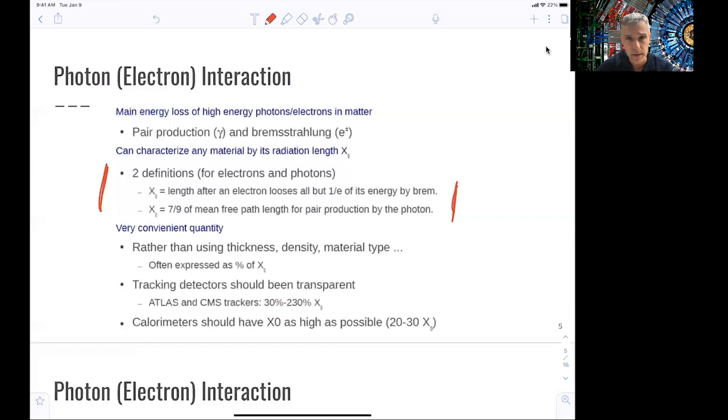Typically, when you build detector concepts, like a collider experiment like ATLAS or CMS, you want the tracking volume to be of low radiation length. For ATLAS and CMS, this depends on the rapidity or the forward direction, but it varies between 30% and 200% of a radiation length. And for calorimeters, you want that all the energy is deposited in the calorimeter and nothing is leaked out in the back. Therefore, you design calorimeters typically with 20 or 30 radiation lengths in mind.